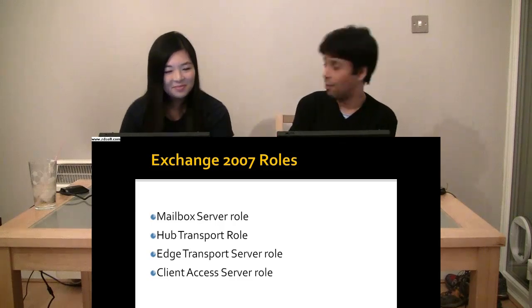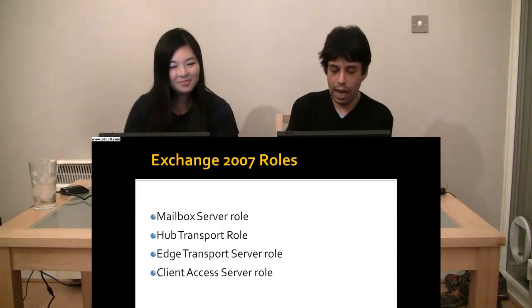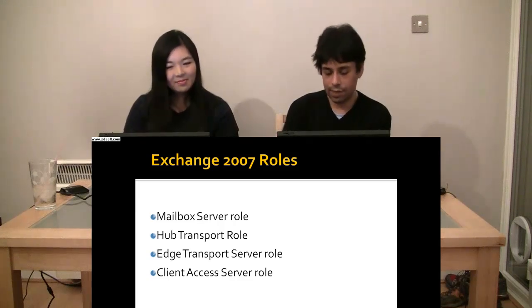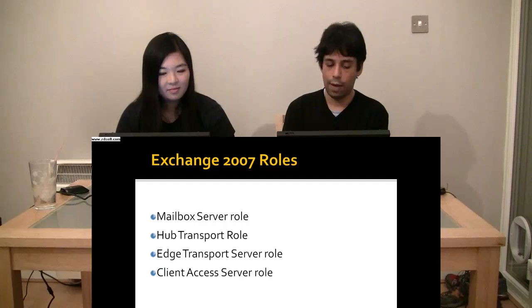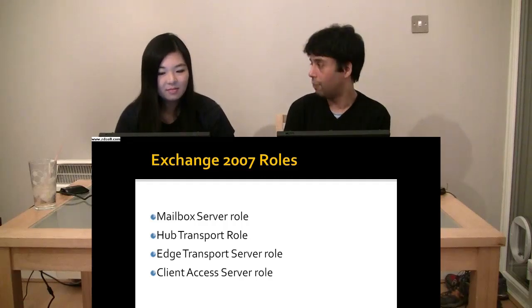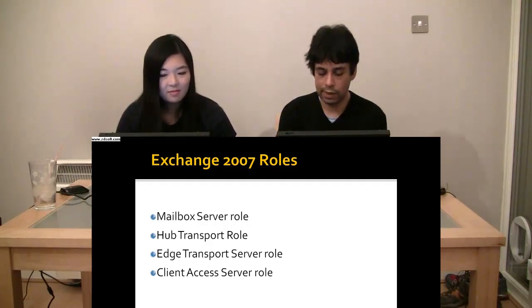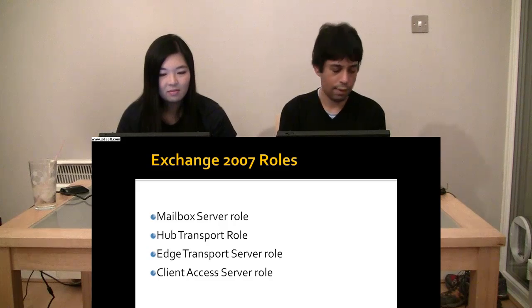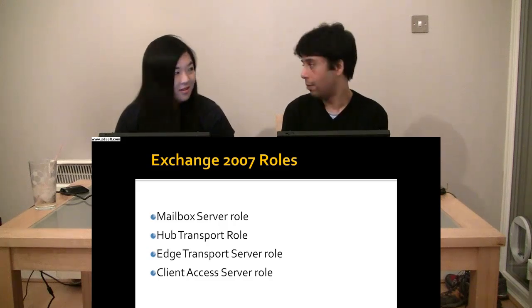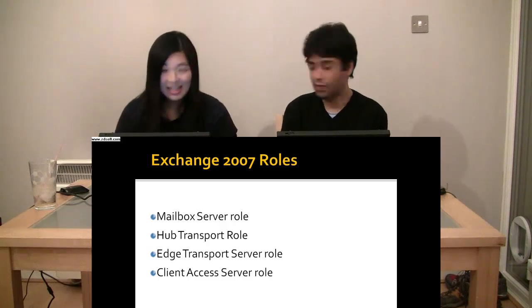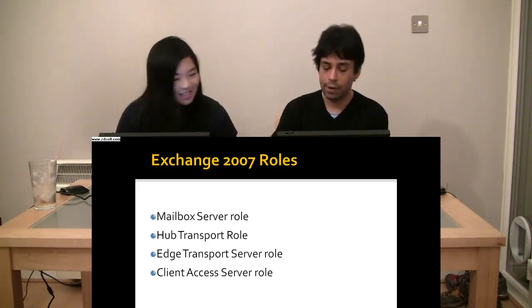So you've got your mailbox server role, you've got your hub transport server role. For high availability, you have more hubs — easy. Edge transport server role, you have more of them — easy. Client access server role. So what do you think that's for? OWA. OWA, yeah. So it's for accessing your mailbox.